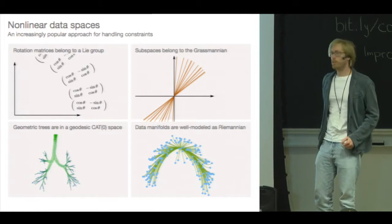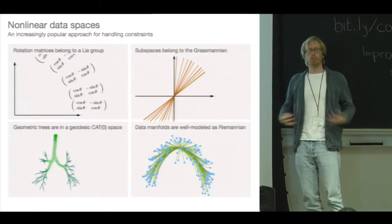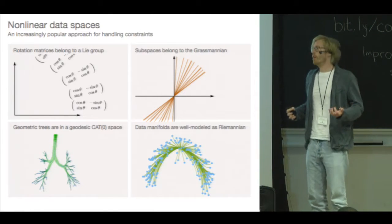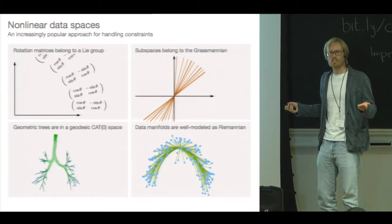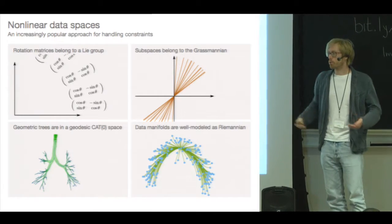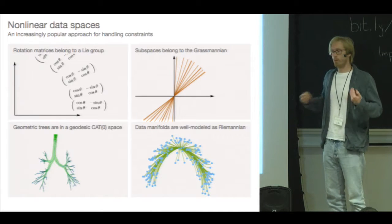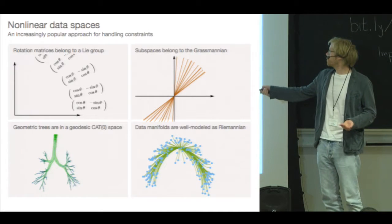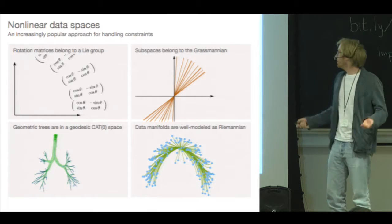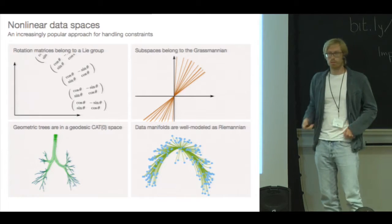Another example, assume you want to build a model of the airway tree of the human lung. Well, the number of branches in such airway trees differ from person to person, so you have topologically changing data, and those can be shown to live in a CAT(0) space. There are many examples of this.